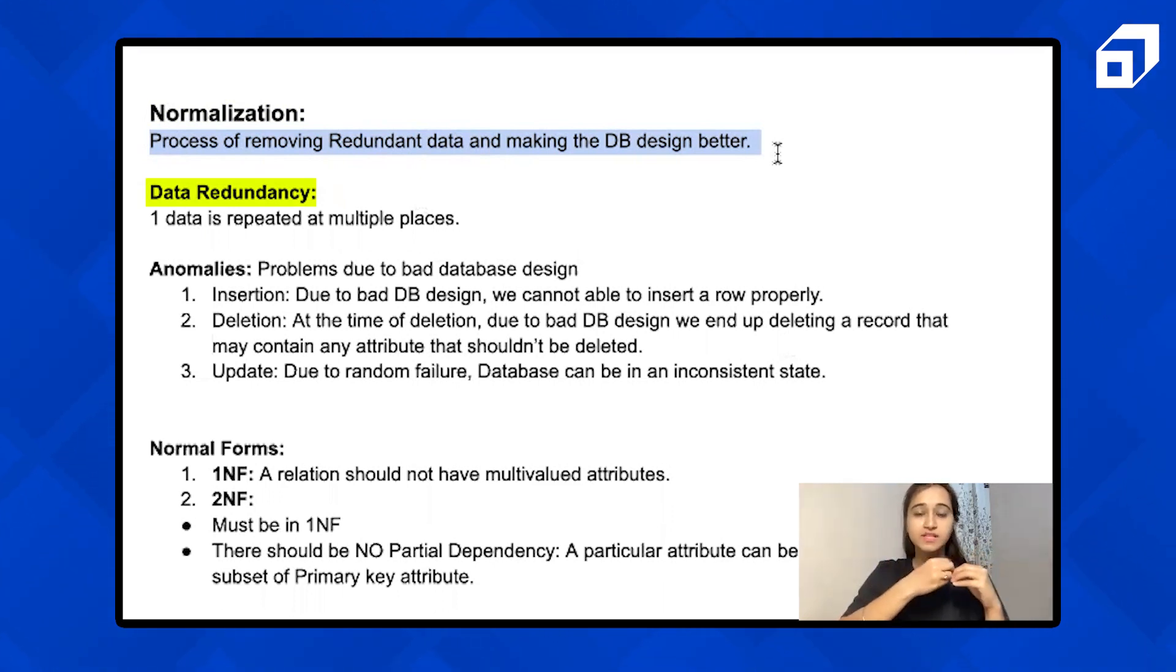What does data redundancy mean? One data is repeated at multiple places. Now, redundant data creates many problems, many problems that are called anomalies. Problems due to bad database design. The very first problem is insertion. Due to bad database design, you cannot insert that row properly. Then deletion. At the time of deletion, due to bad database design, we end up deleting a record that may contain any attribute that shouldn't be deleted. Update anomaly, due to random failure, your database can be in an inconsistent state. Due to bad database design, maybe your database is not consistent anymore.